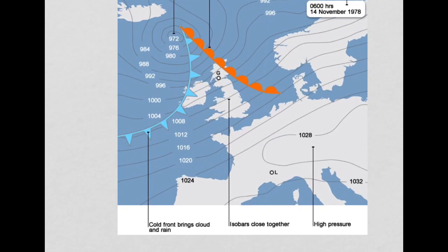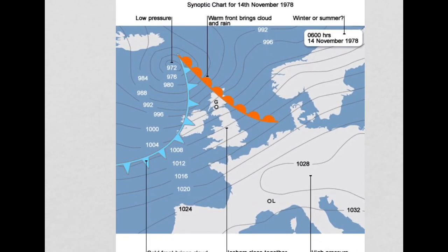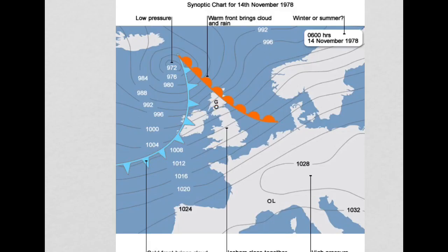Depressions typically form to the west of the UK and Ireland. They typically track east and slightly north as they move across the UK, and that's the pattern we see throughout the majority of the year.